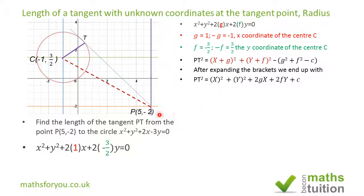So we end up with PT² = 45. Don't forget g = 1 and f = -3/2. PT is the square root of PT², which equals 3√5.